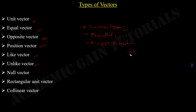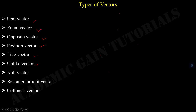Now talking about null vector. A null vector is a vector whose magnitude is zero. It is called a null vector or zero vector. We can also say that a null vector is a point vector which has no modulus. If A is a null vector, the modulus of the null vector will be zero.